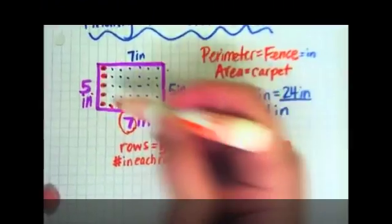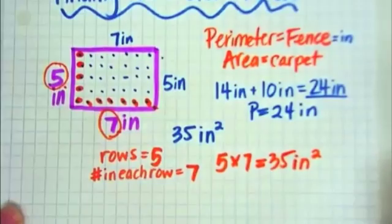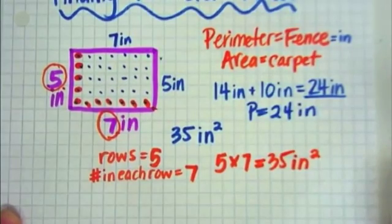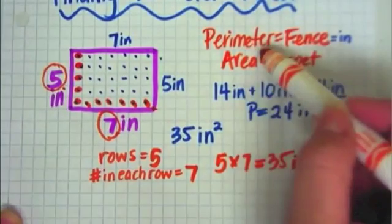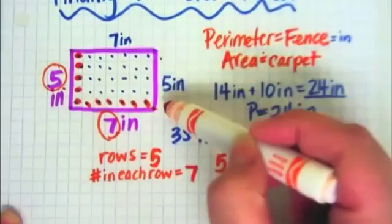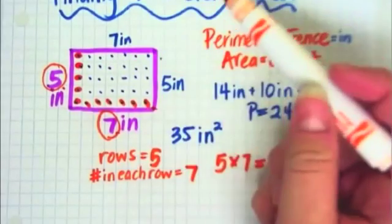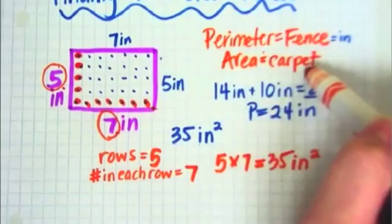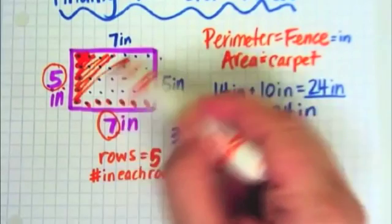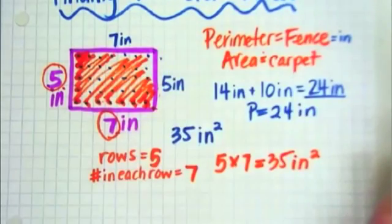7 times 5 is 35. It's very tricky. You have to just remember that perimeter is the fence, which is the total length around the shape, and area is the carpet, which is all of this inside the shape. Good luck!